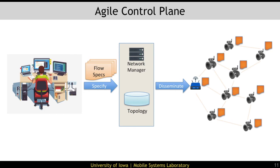WARP also includes an agile control plane that outperforms the state-of-the-art. The key idea is to shift the burden of program synthesis to network devices instead of performing synthesis centrally on the network manager. Accordingly, WARP's network manager disseminates the workload information, and each node then constructs the program fragment it is to execute at the beginning of each slot. The advantage of this approach is that when the workload changes, rather than disseminating complete programs — which tend to be large — WARP only needs to disseminate the changes to the workload, which can be efficiently encoded.